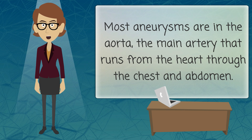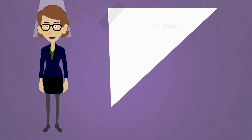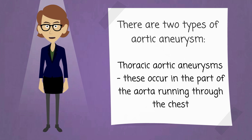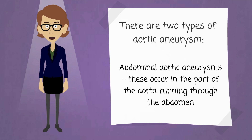Most aneurysms are in the aorta, the main artery that runs from the heart through the chest and abdomen. There are two types of aortic aneurysm: thoracic aortic aneurysms, which occur in the part of the aorta running through the chest, and abdominal aortic aneurysms, which occur in the part of the aorta running through the abdomen.